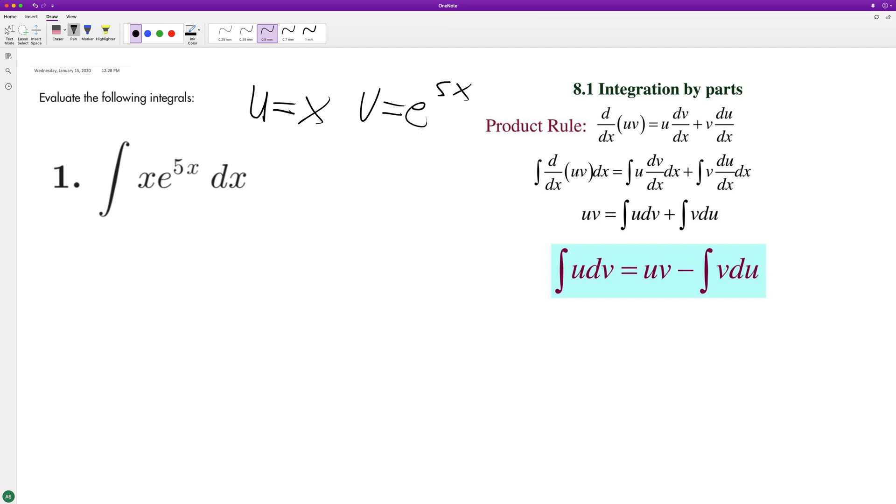You can call these f of x or g of x too, it doesn't matter. So what we'll have here is x and then dv, and we'll have the integral of e raised to the 5x which is going to be 1 over 5 times e raised to the 5x.